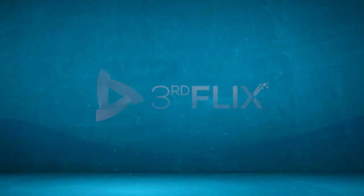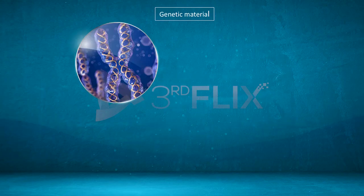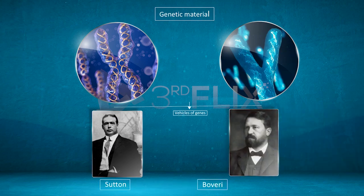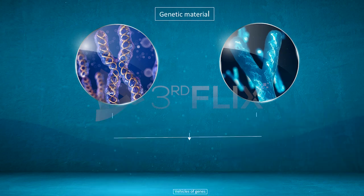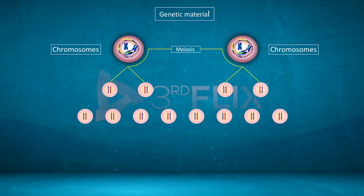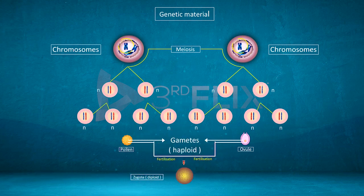The search for genetic material. Genes are the locus on the chromosomes that code the character of an organism. Chromosomes are referred to as the vehicles of genes as per the chromosomal theory of Sutton and Bovary. During gametogenesis, the chromosomes get segregated due to meiosis. The gametes hence produced are called haploid. They form a zygote of diploid nature due to random fertilization.